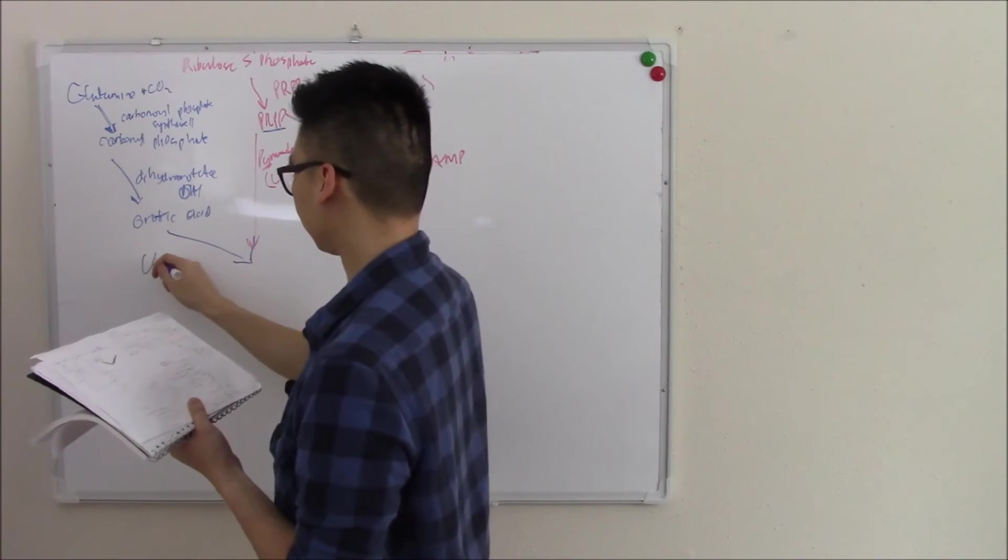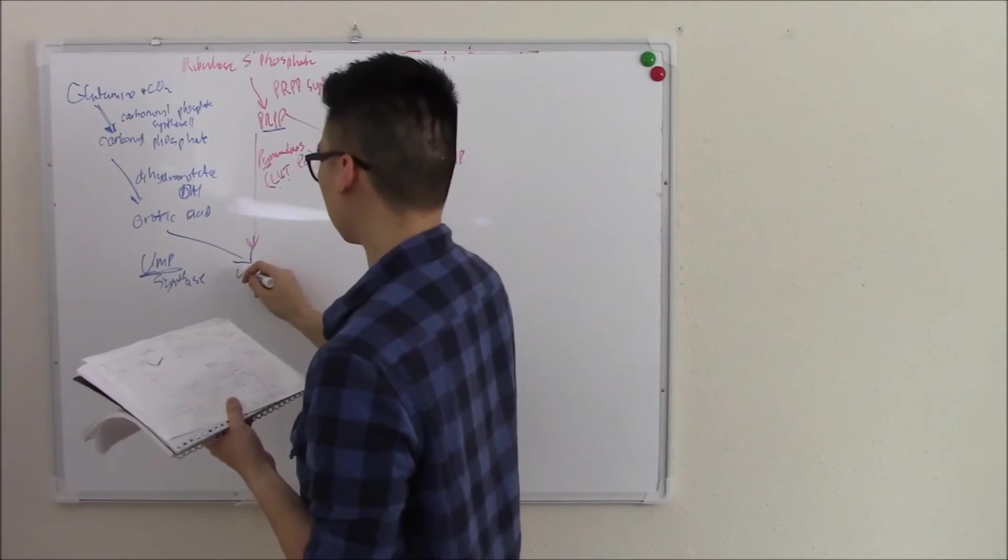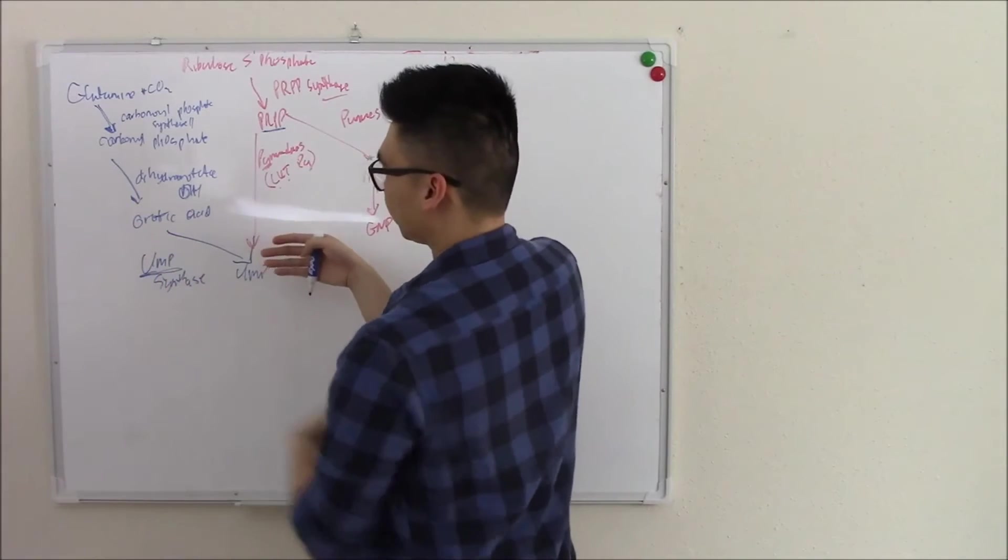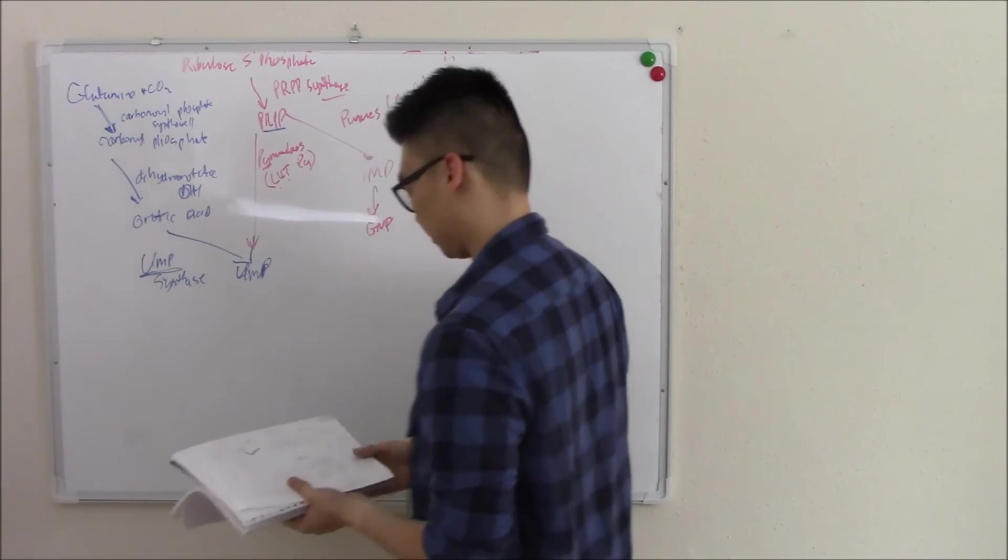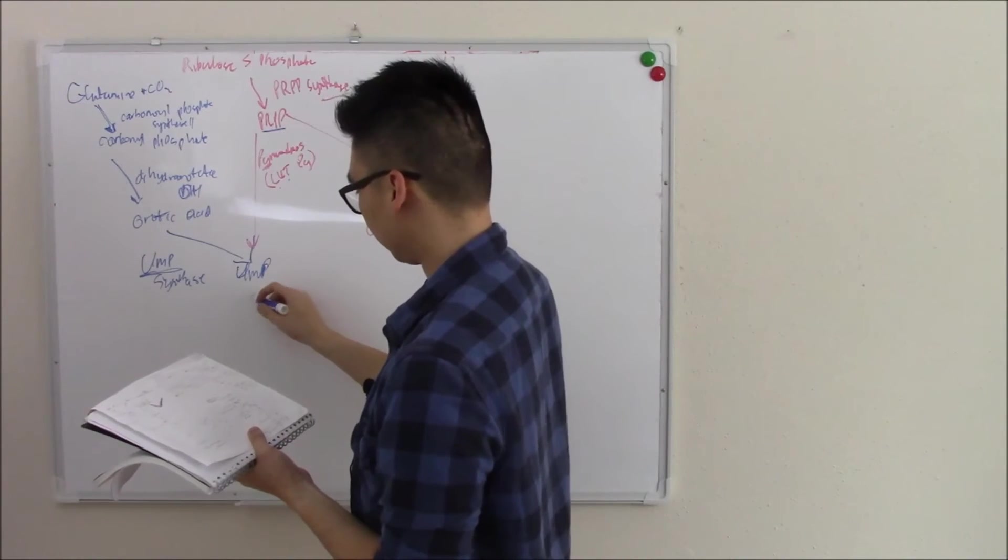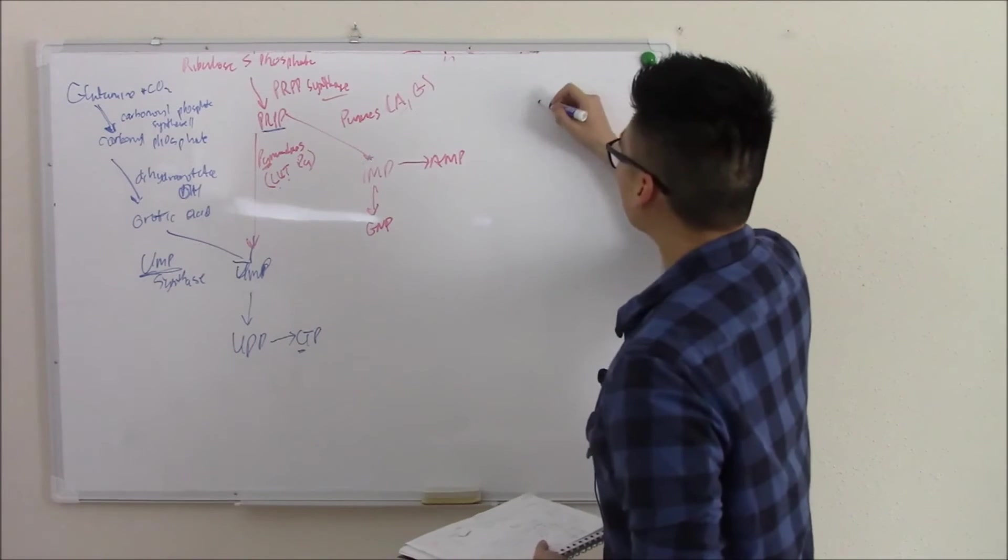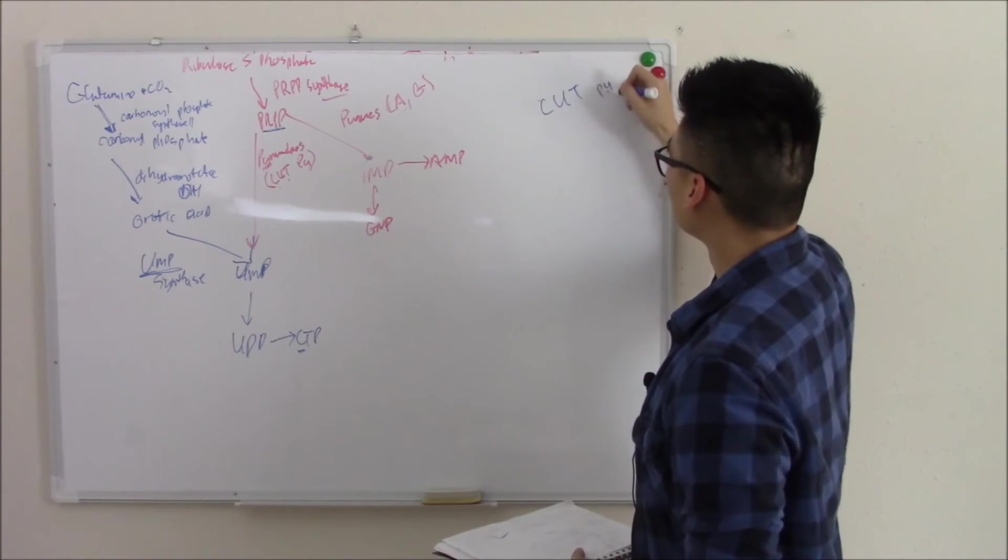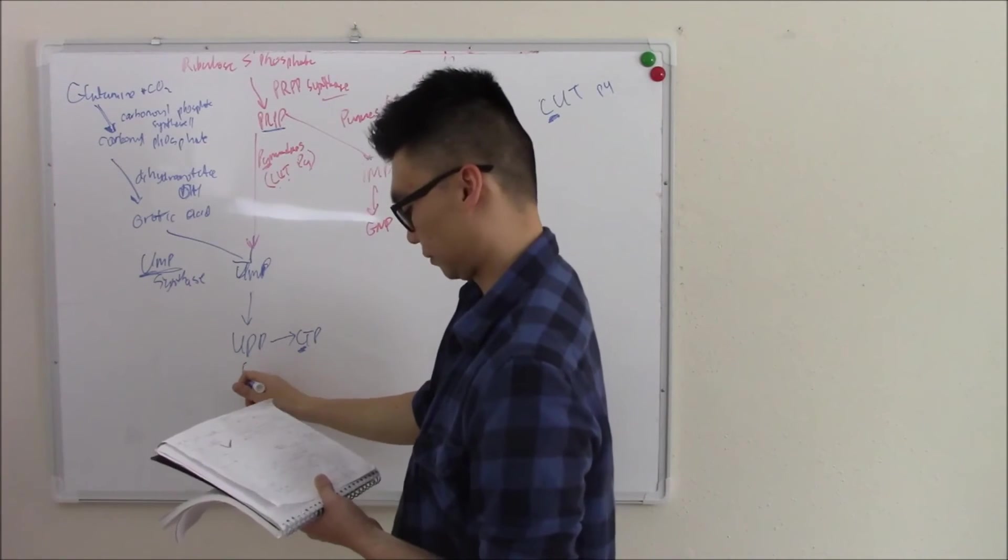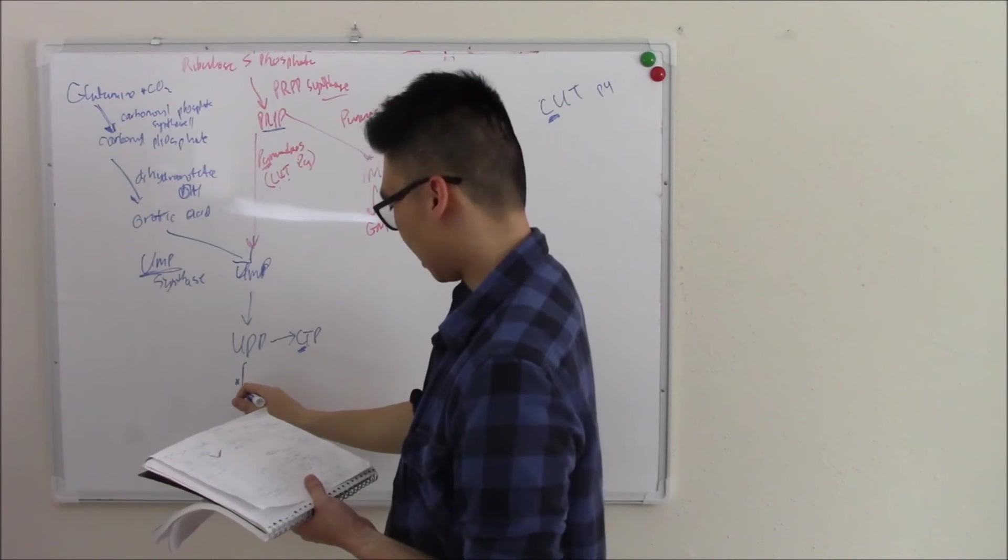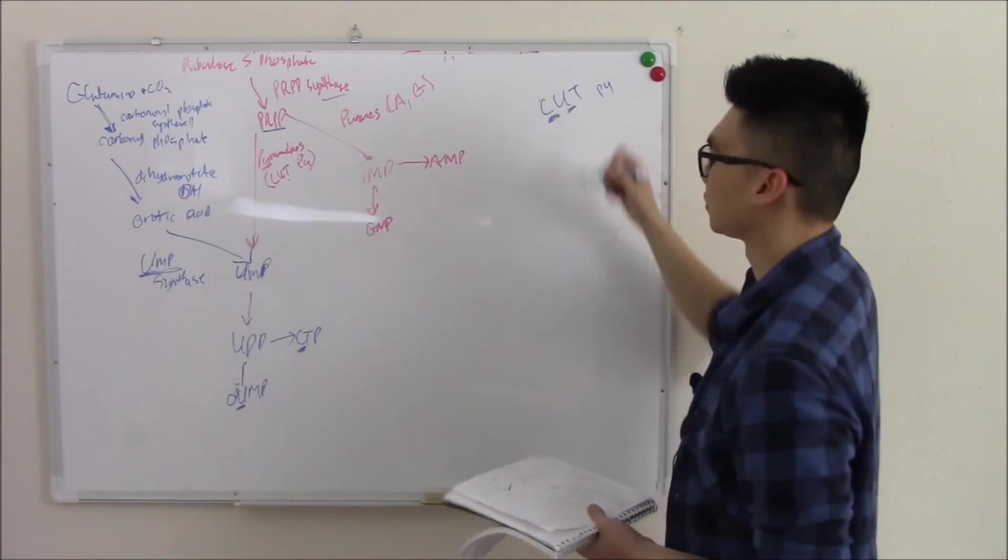And orotic acid gets worked on by UMP synthase, which makes UMP. And that's the last way to converge. Orotic acid and PRPP converge together to make UMP. UMP makes UDP and that becomes CTP, which if you remember from cut the pie, that's C. That is your cytosine. And it also makes something called dUMP or dump. And that is your U or uracil.